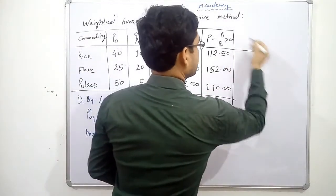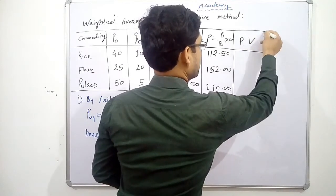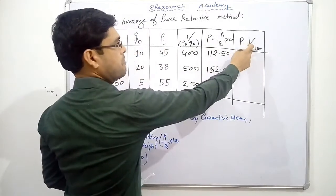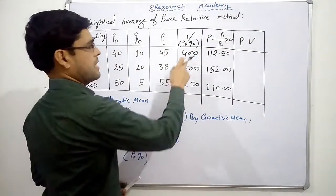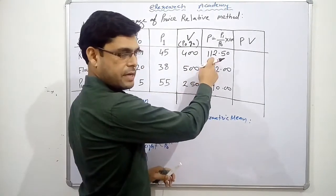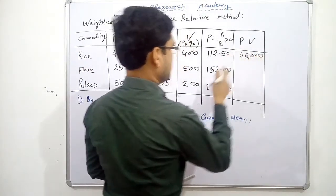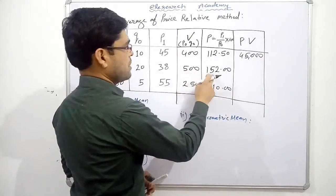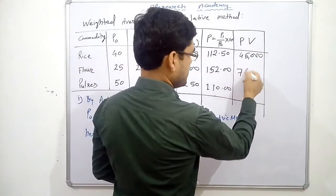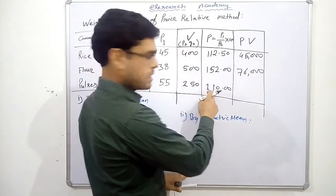Next we need PV, which is price relative multiplied by value weight. So 400 × 112.5 = 45,000; 500 × 152 = 76,000; and 250 × 110 = 27,500. These are our price relative times value weight values.